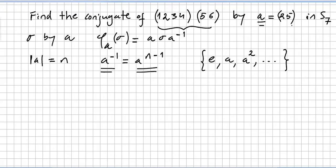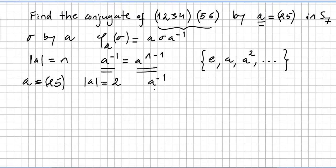Here a is (2 5) — that is, 2 goes to 5 and 5 goes to 2 — so the order of a is 2. Since the order of a is 2, the inverse will be a^(2-1) = a^1, so the inverse of a is the element itself.